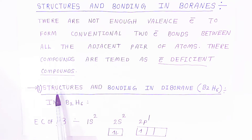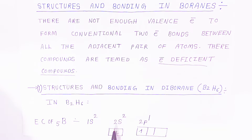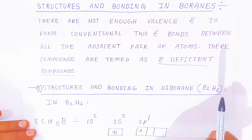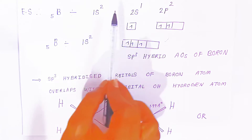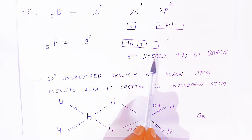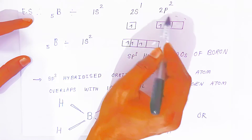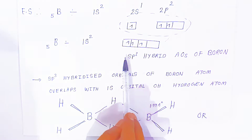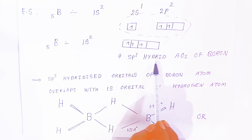First, we are going to see the structure of diborane — the example is B₂H₆. When we consider the electronic configuration of boron, atomic number 5, it is 1s² 2s² 2p¹. The 2s² and 2p¹ energy levels are very close, so one electron from 2s migrates to 2p. The excited state electronic configuration becomes 2s¹ 2p². Boron then undergoes sp³ hybridization, forming four sp³ hybrid atomic orbitals, one of which is vacant.